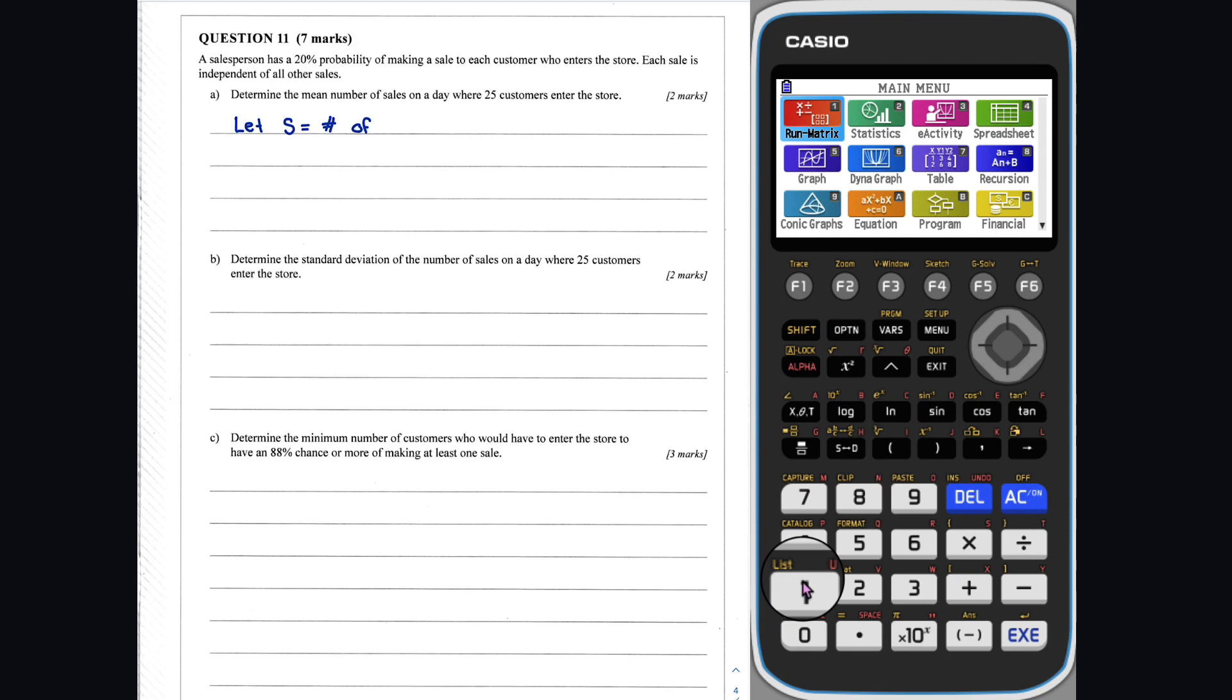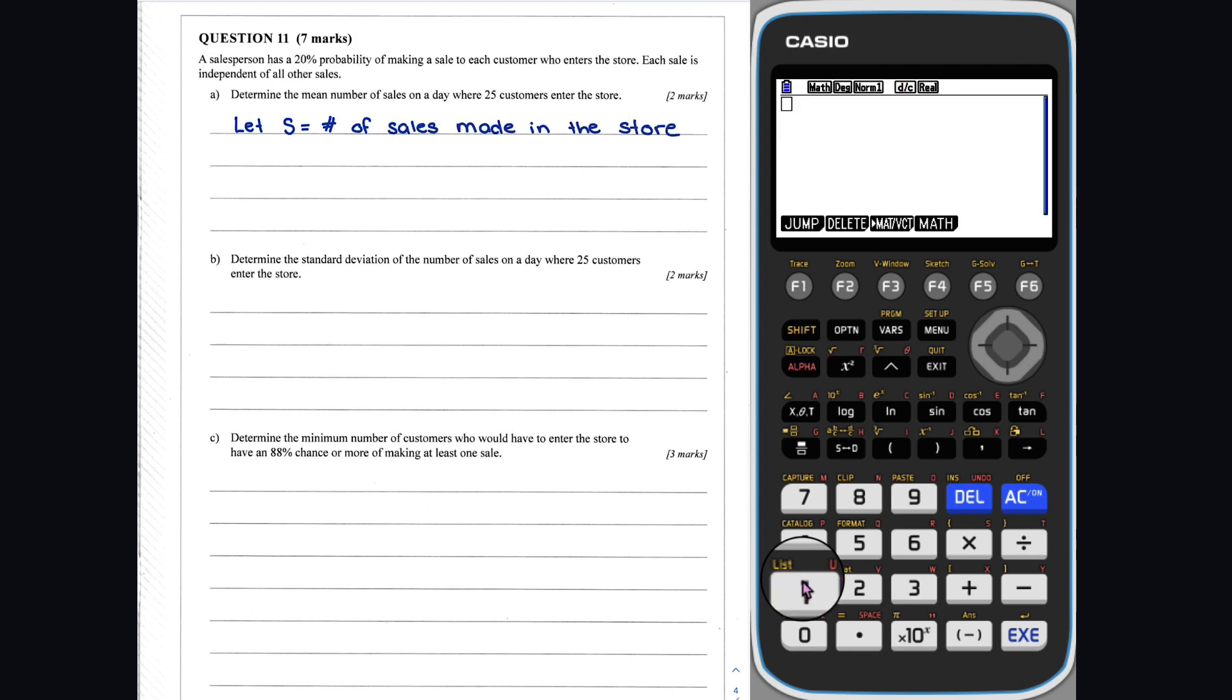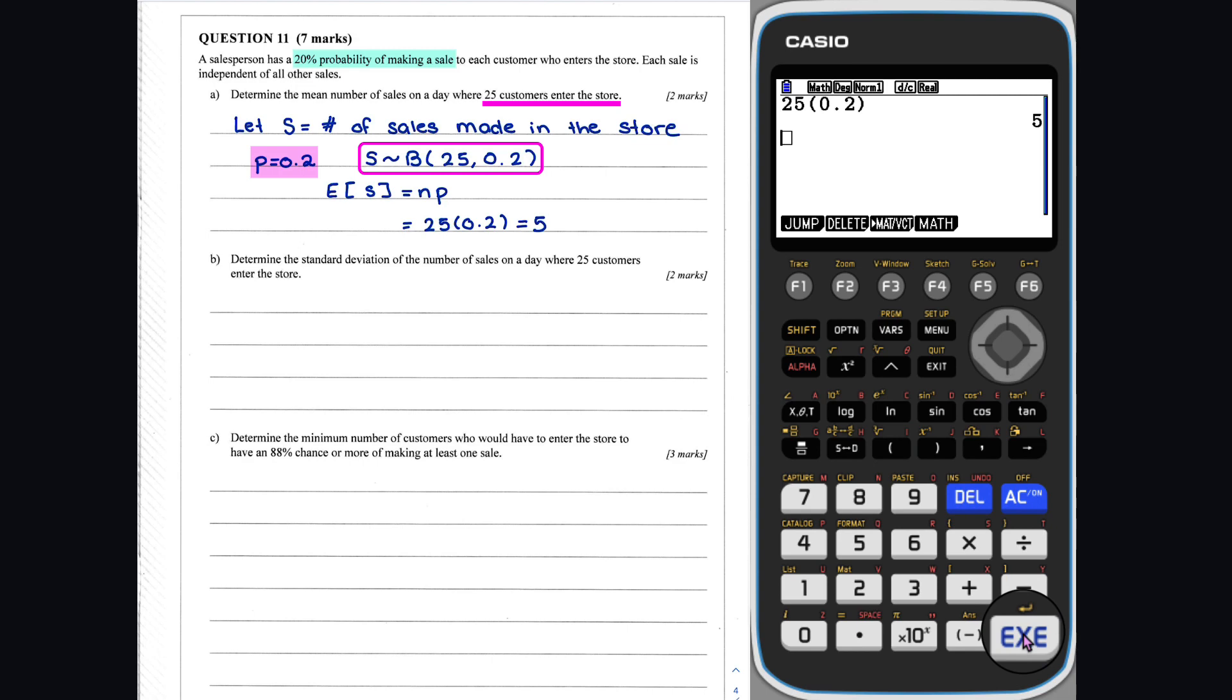Let s equal the number of sales made in the store. We are told that the probability of a sale is 20%. Given that 25 customers come into the store, the number of sales s can be modeled using a binomial distribution where the number of trials is 25 and the probability of success is 0.2. To calculate the mean number of sales, we evaluate. So the mean number of sales on a day where 25 customers enter the store is 5 sales.